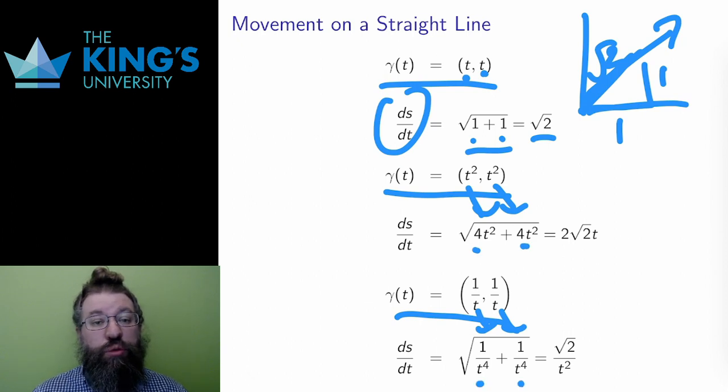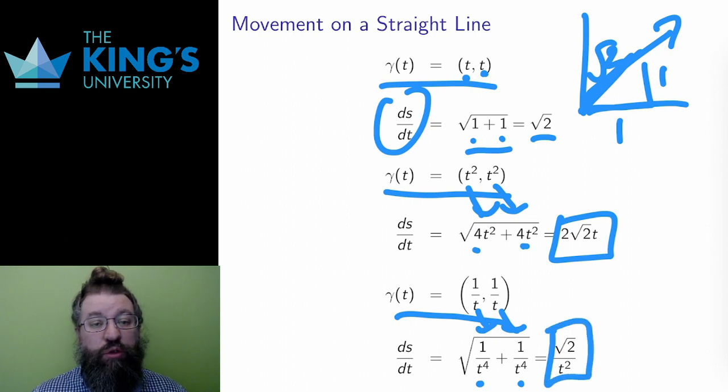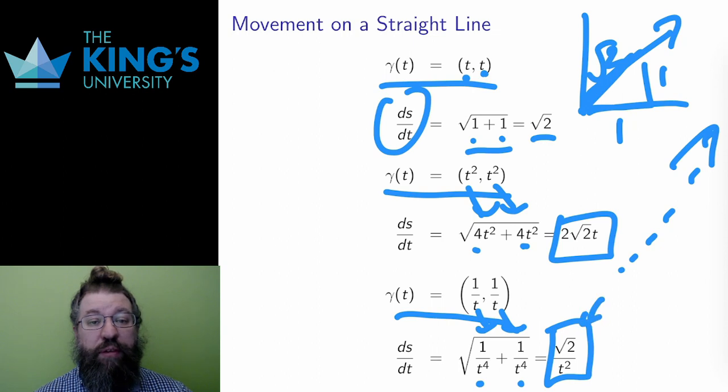The result is 2 root 2 t for the first variant. This shows that the t squared, t squared reparameterization is accelerating. The speed is getting larger over time. The speed is root 2 over t squared for the second, which shows how the speed is decreasing for the second parameterization.